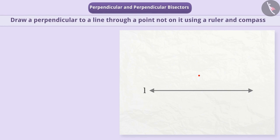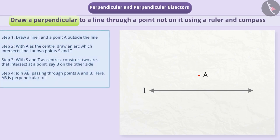Now look here. We are given a line L and point A is not lying on the line. Just think, how can we draw a perpendicular to the line through this point? Let me explain. Here we will use a ruler and compass to draw a perpendicular.